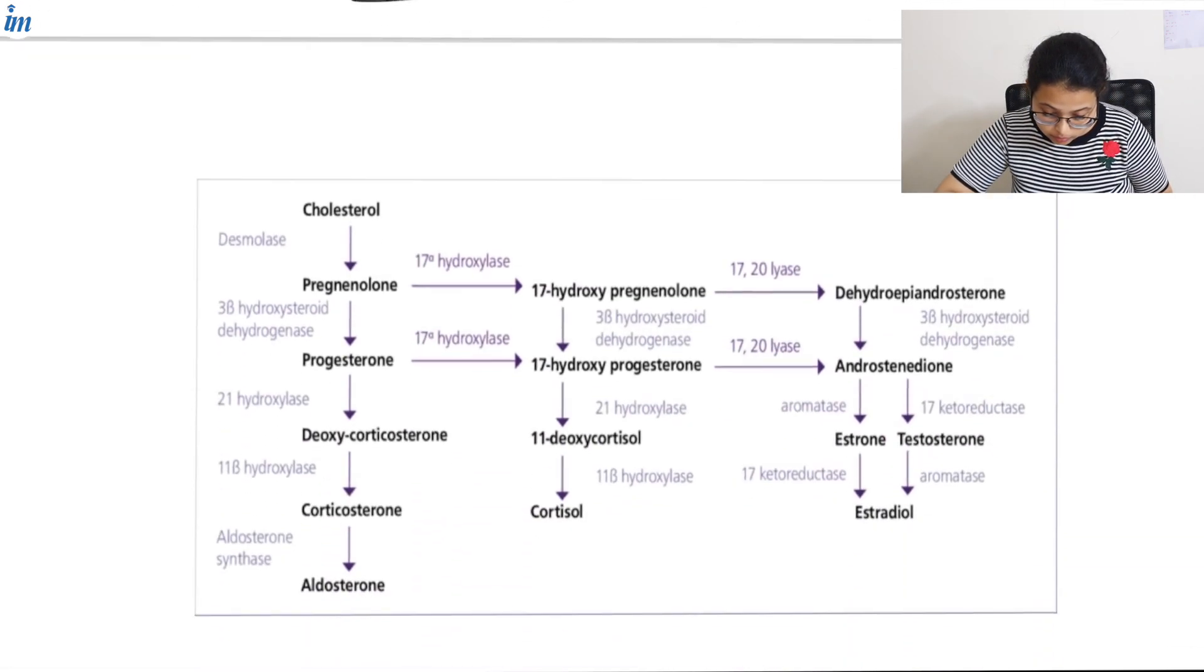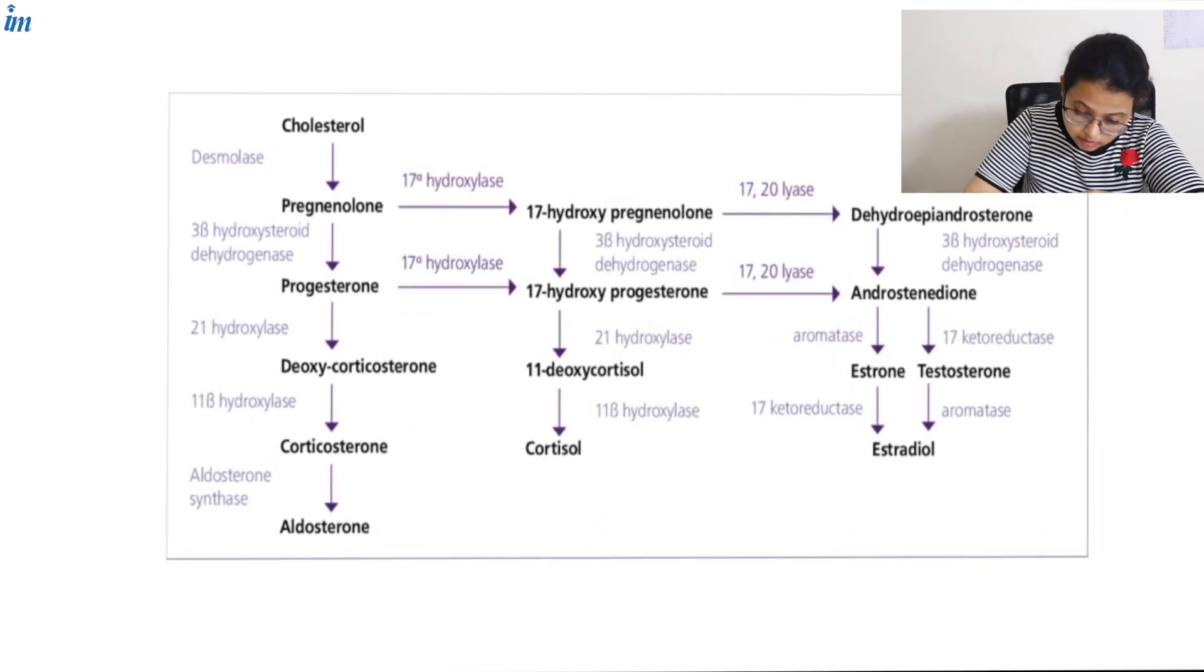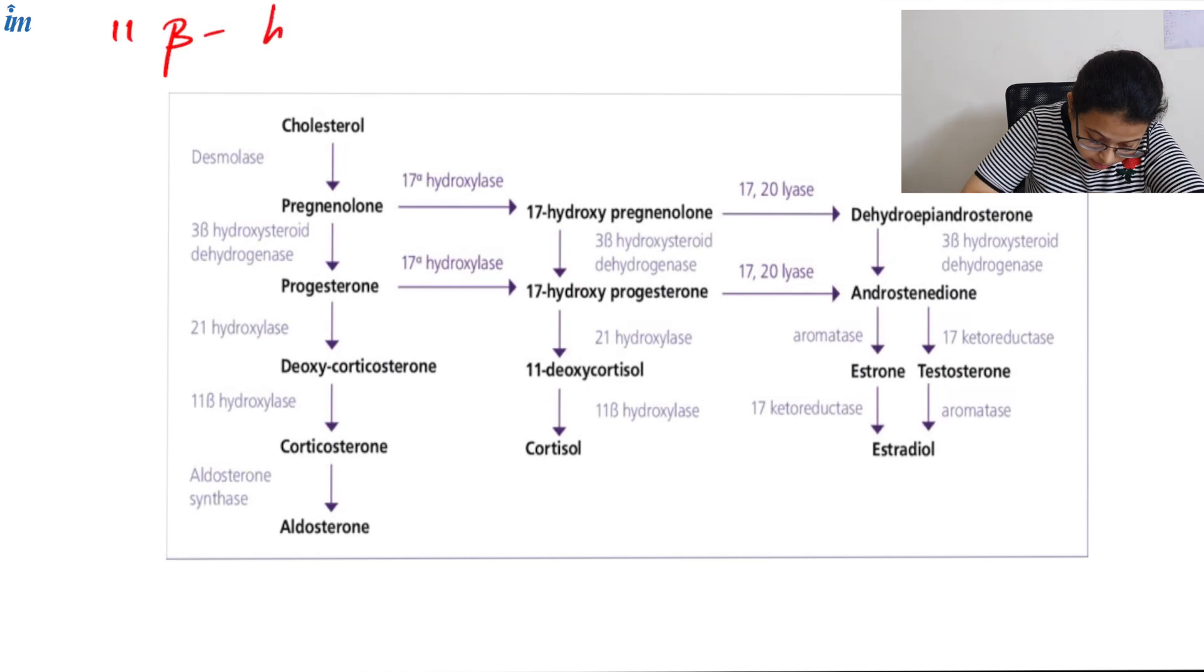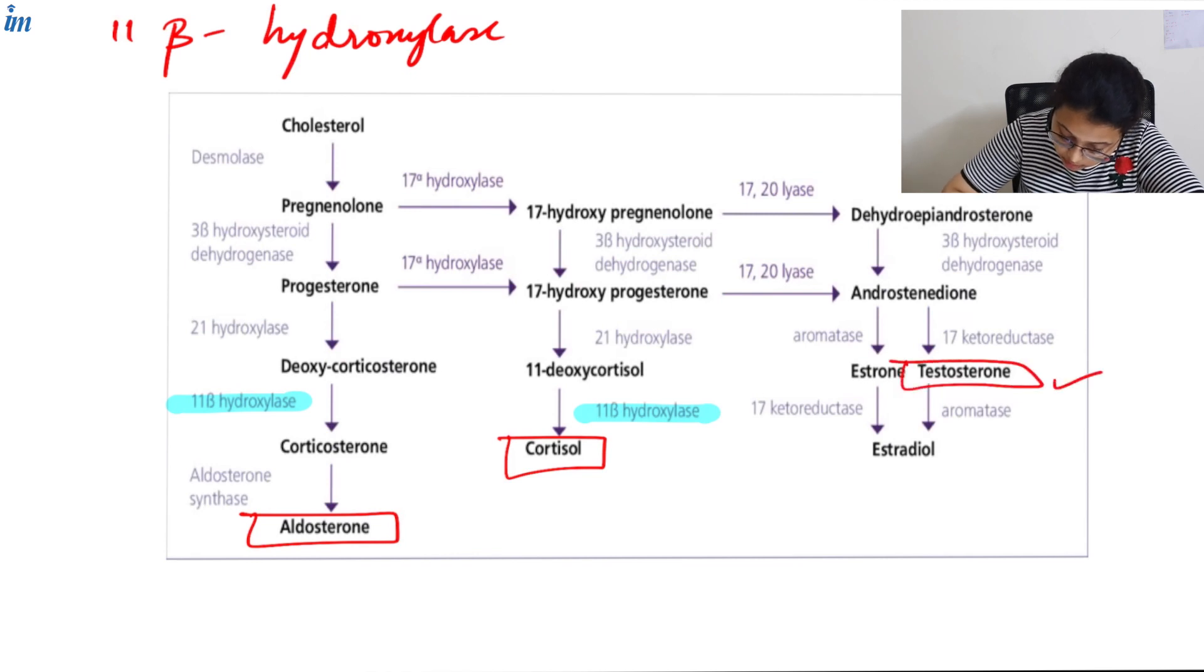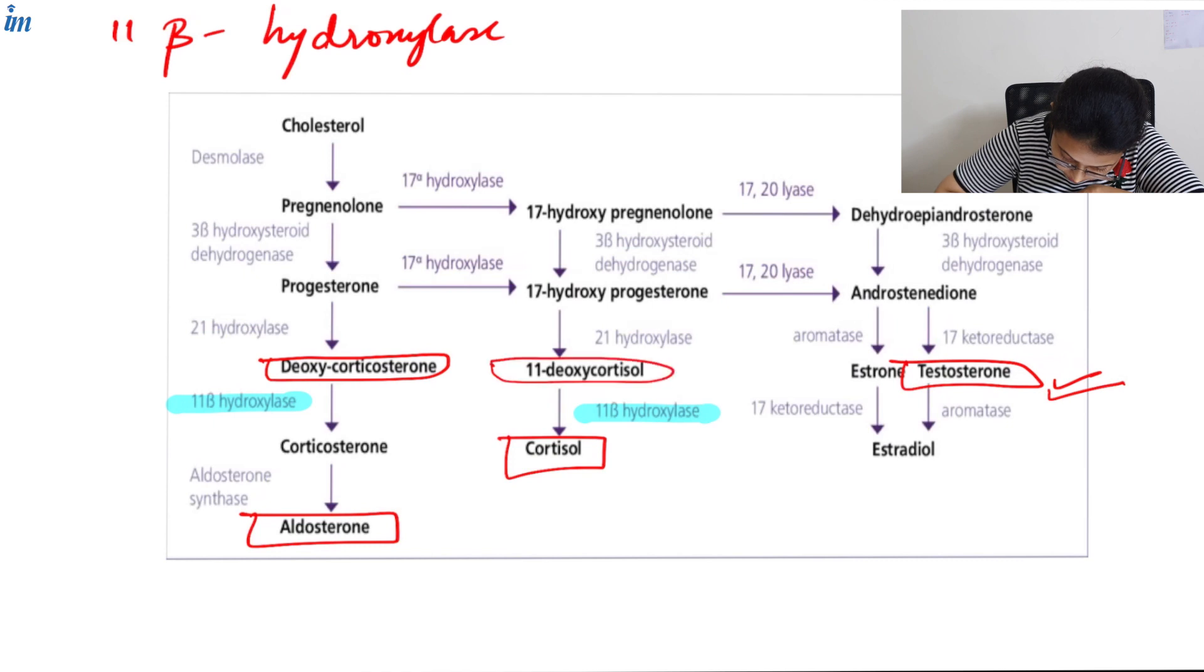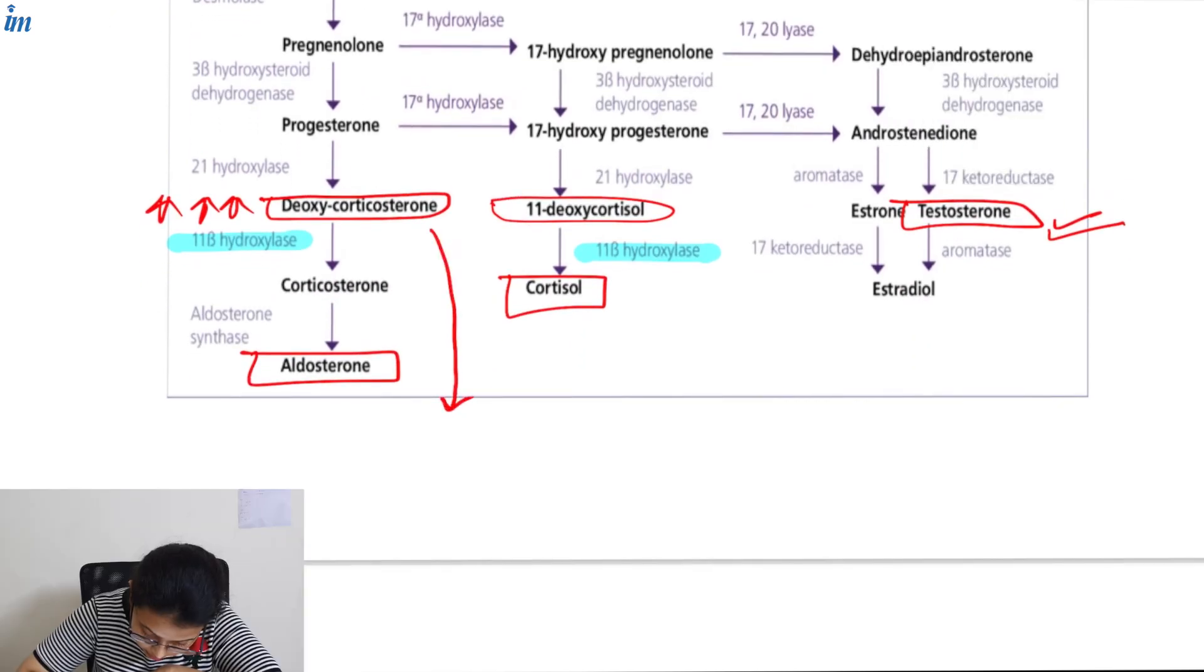Now let's see the next enzyme deficiency: 11-beta-hydroxylase. When this enzyme is deficient, again we won't get aldosterone or cortisol, but testosterone production is not hampered. Also, when 11-beta-hydroxylase is deficient, the intermediate metabolite deoxycorticosterone increases, and this has mineralocorticoid activity.